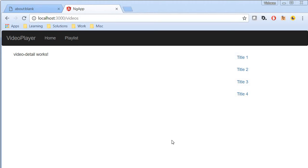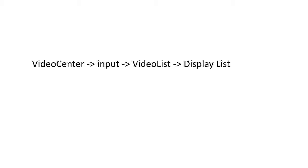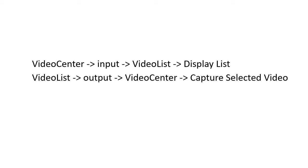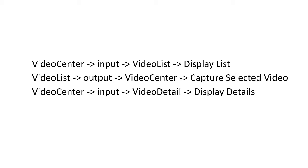In this video we are going to display the detailed view of a single video. Right now we just have an array of videos in the video center component. We send this as an input to the video list component and it is being displayed inside the video list component. But now when we click on a video, we'll send an event as output from video list to video center, and that event contains information about the clicked video. We will capture this video in video center component and send it as an input to the video detail component, where we will display the details using Angular and HTML.